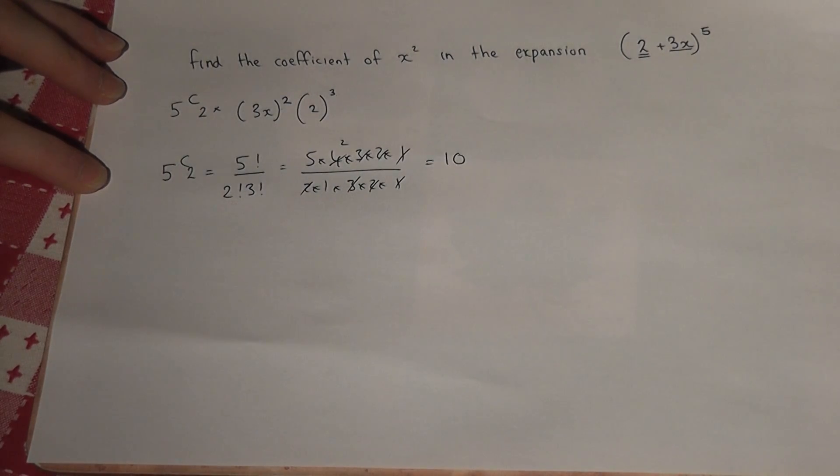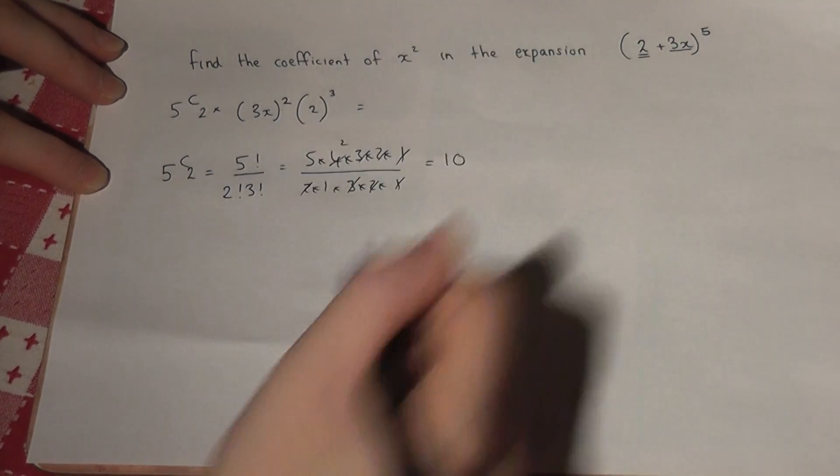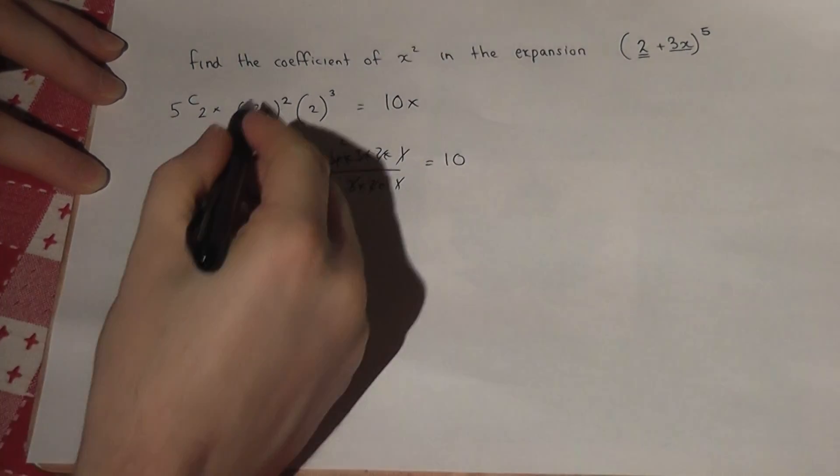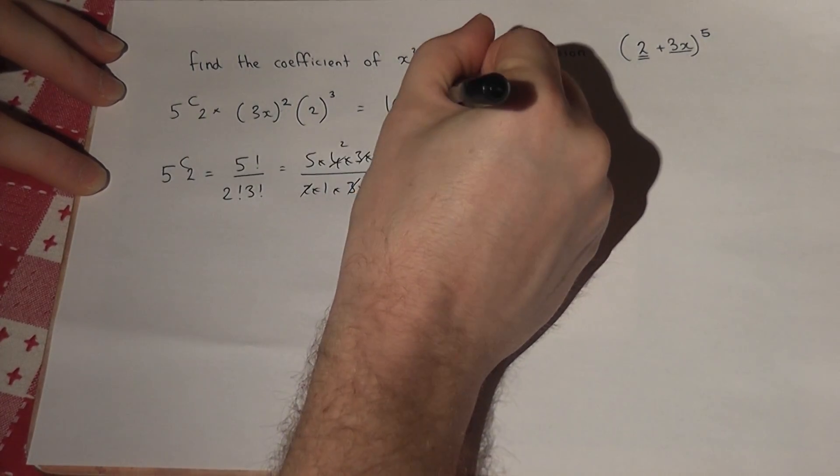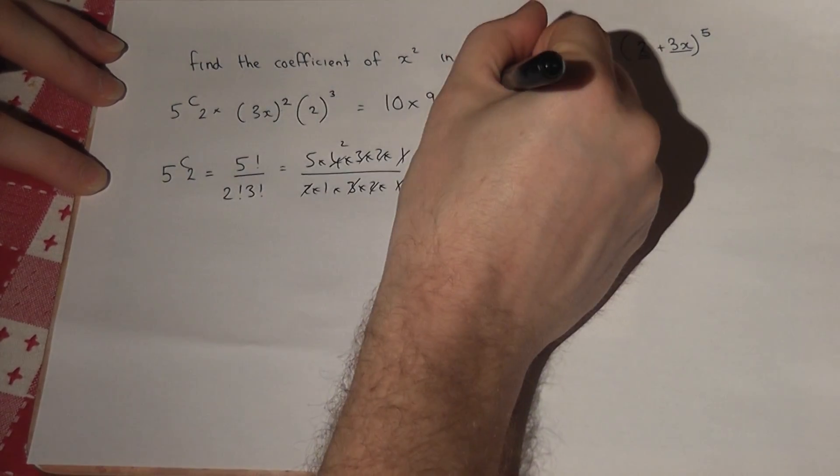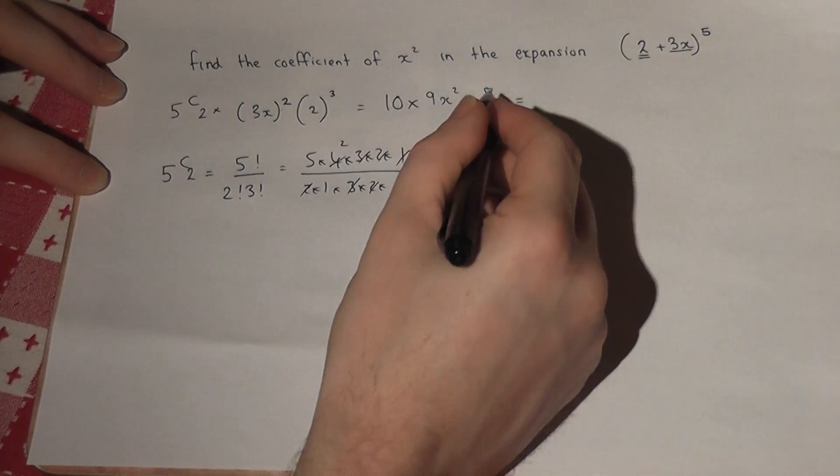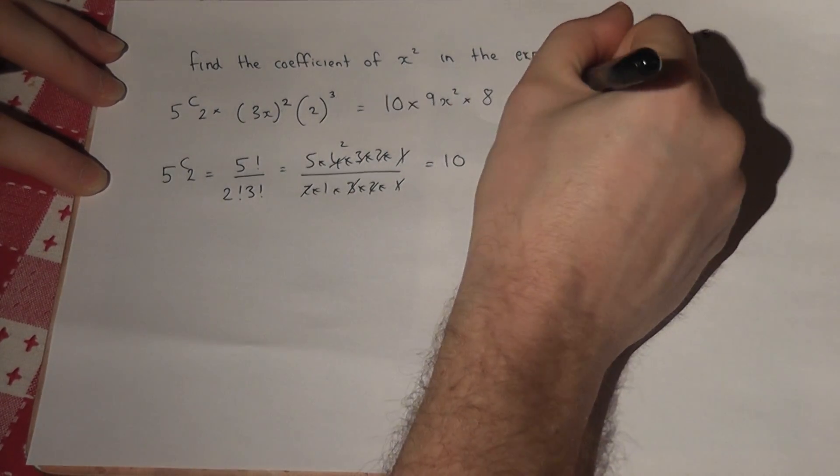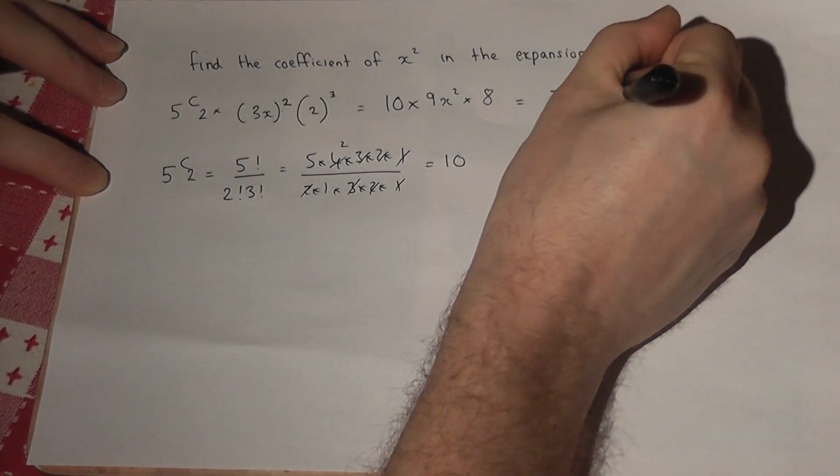So therefore, the x squared term is 10 times 3 squared is 9, 9x squared, times 2 cubed is 8. 9 times 8 is 72, so 720x squared.